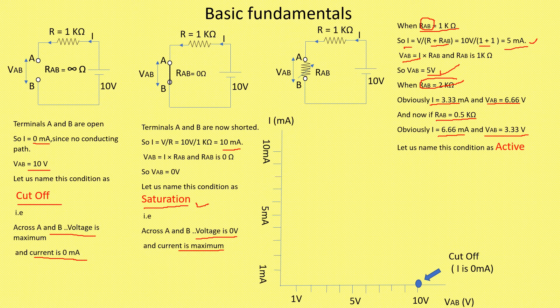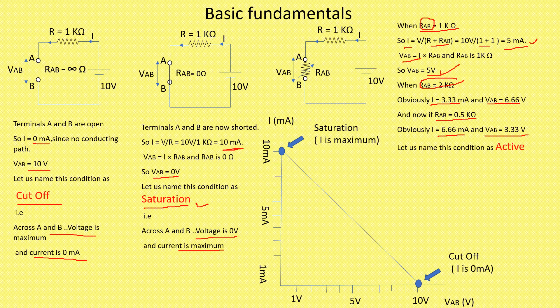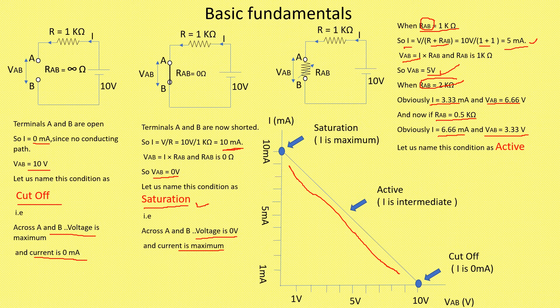Now I want to draw the point for saturation. Saturation means voltage is 0, that is VAB is 0, but current is 10 milliampere. This point is drawn on the graph — this is the point for saturation, and it is written that saturation current is maximum. Now we will connect these two points. Active mode means intermediate values — values between cutoff and saturation. We cannot take the value of cutoff, we cannot take the value of saturation; the values in between are known as the active region. This particular line is known as the load line.